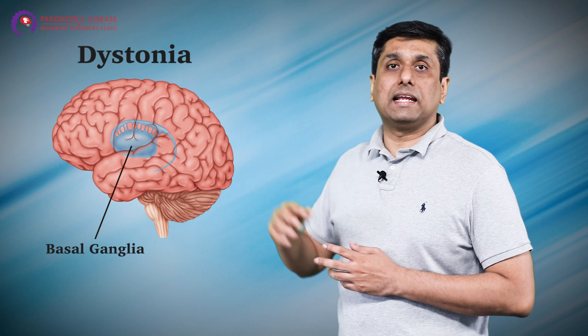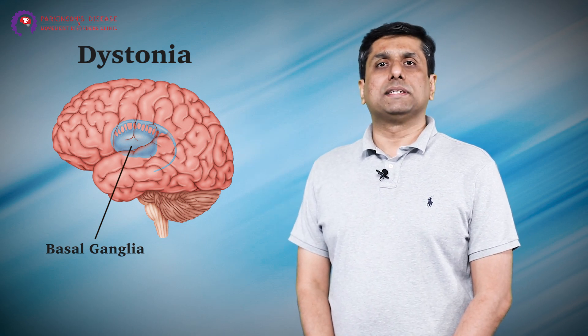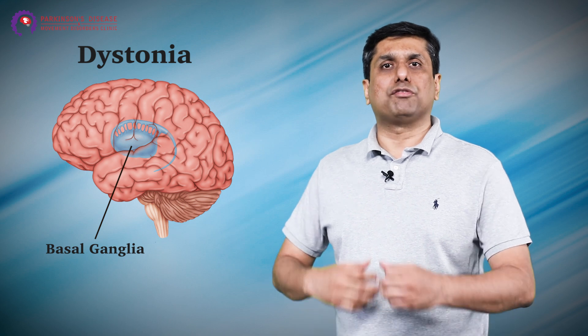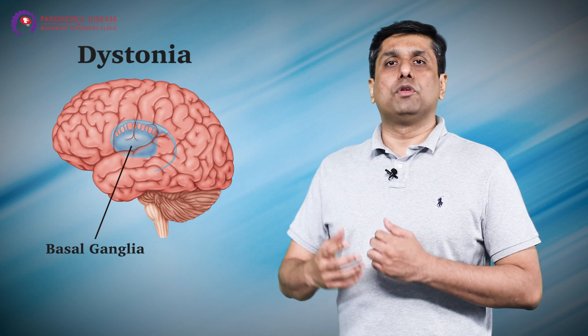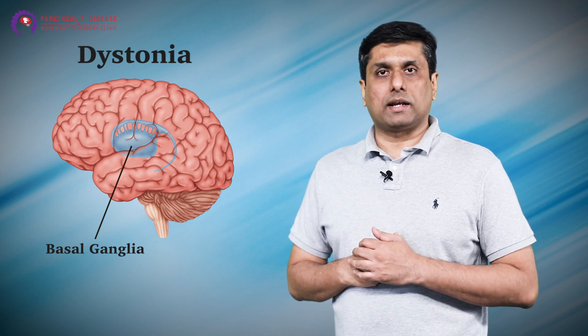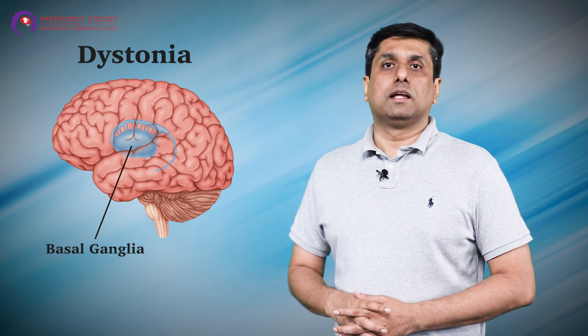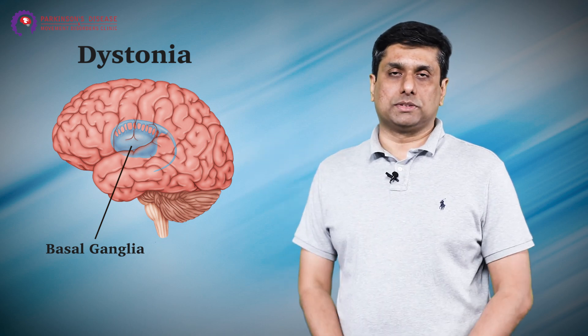Dystonia primarily occurs due to a part of the brain called the basal ganglia, which is not functioning well. It is basically dysfunction of the part of the brain which controls fine skill movements, and when you lose those fine skill movements, you will have abnormal muscle contractions leading to abnormal posturings. These are called dystonia syndromes.